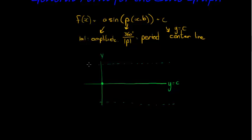The amplitude also tells me how far I go below my center line. So the maximum is center line plus amplitude, and the minimum is center line minus amplitude. Then the period tells me how quickly I should make a full cycle — at 360 degrees divided by p, I have to have completed my full graph.